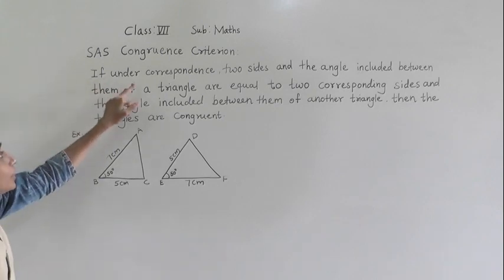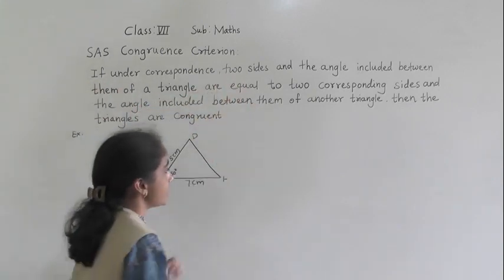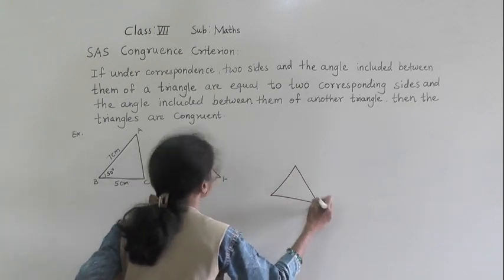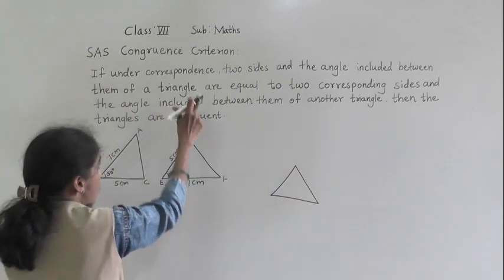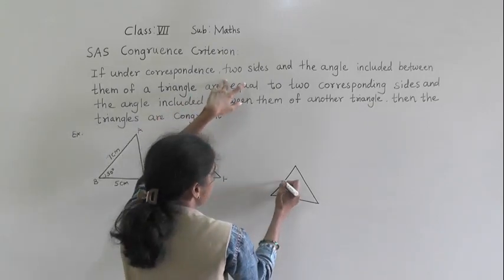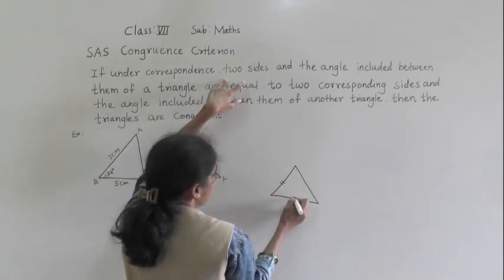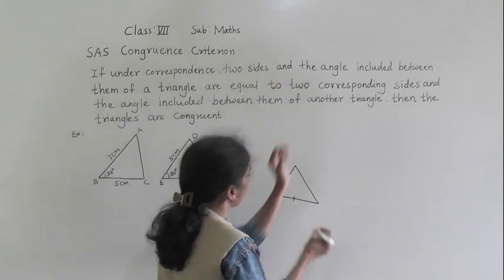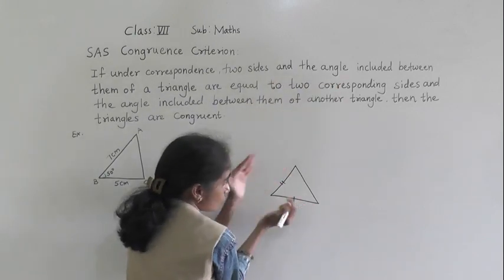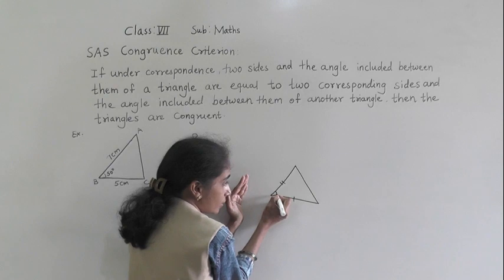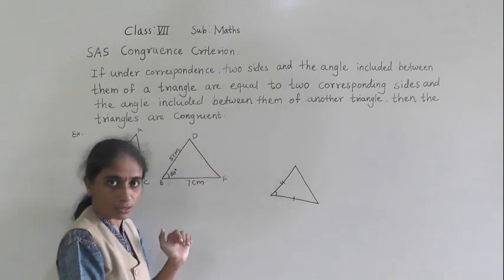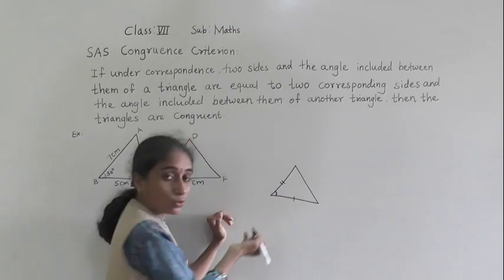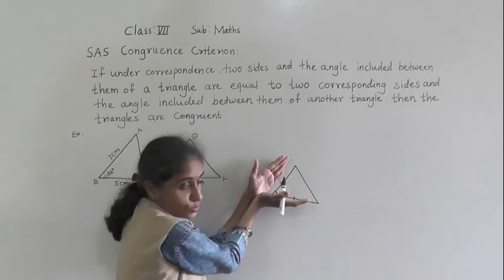So if under correspondence two sides — see this side and this side — and the angle included between them. Now these are the two sides, so which is the included angle? This angle will come as the included angle. These are the two sides and this angle is the included angle between these two sides.